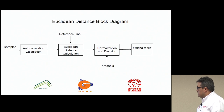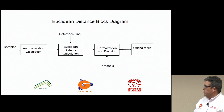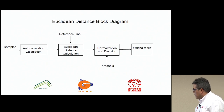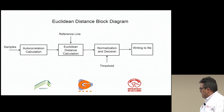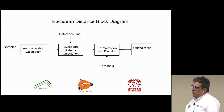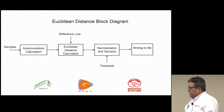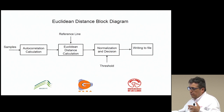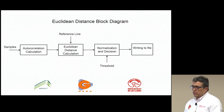Then it does a normalization and makes a decision. That normalization is done so the distance will be between 0 and 1. Here, we introduce the threshold and make the decision, and write the result to a file along with information such as location coordinates — longitude and latitude — the frequency, the time, and the date, so you can get data for further analysis to study the usage patterns of the channels.